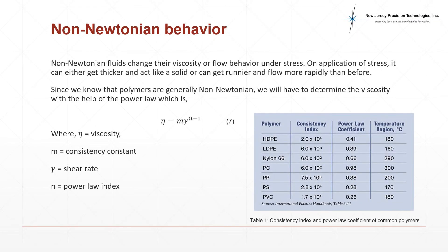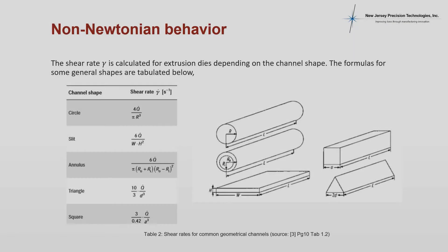Polymers fall under a category of fluids known as non-Newtonian fluids. These fluids change their viscosity or flow behavior under application of stress. Their viscosity is determined with the help of power law as seen in equation 7. Table 1 shows the power law index values for common polymers used in extrusion. The shear rate that the polymer will undergo inside the extrusion die depends on the geometry of the channel. Table 2 shows the shear rates and how to calculate them for common geometric channels.